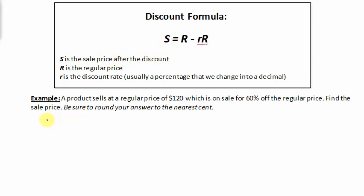Using the formula, S is the sale price after the discount, which we are looking to find, so that's unknown. Capital R is the regular price, which is $120, and little r is the discount rate, which is a percentage—60% off, or 0.60.